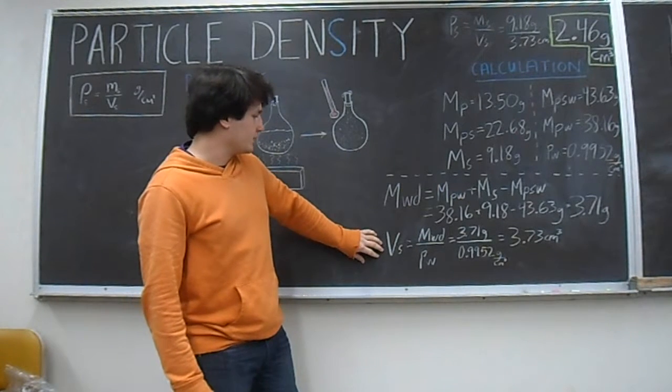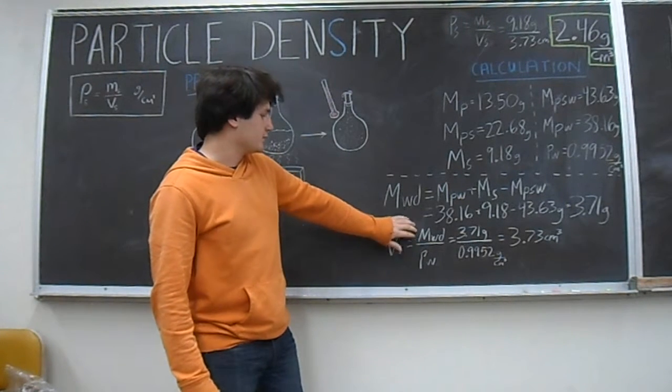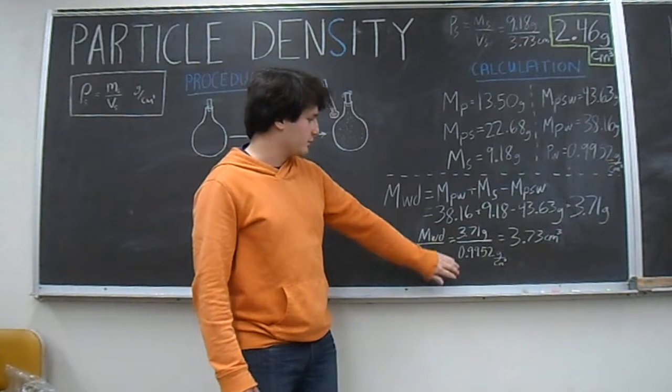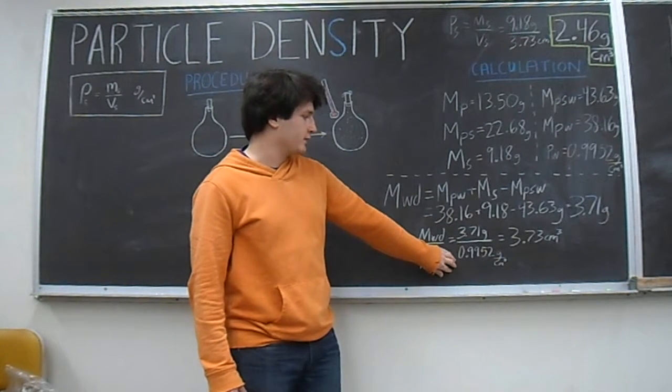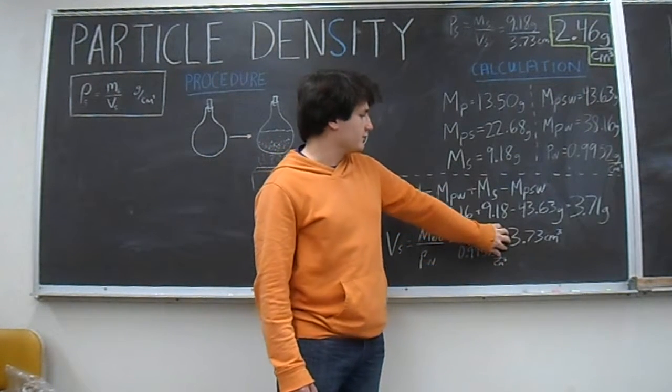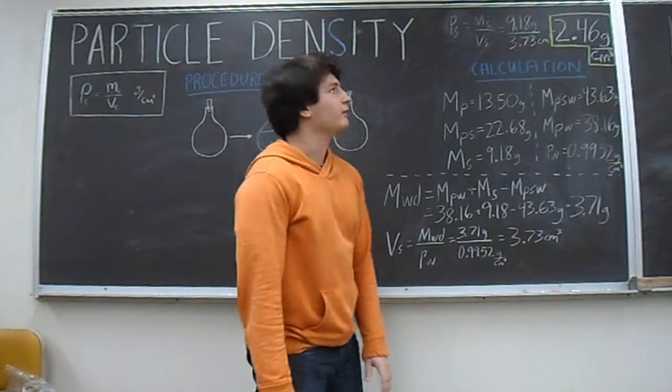After that, you can find the volume of the solids, which is the mass of water displaced over the density of water. 3.71 grams divided by 0.9952 grams per cubic centimeter gives you 3.73 cubic centimeters.